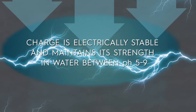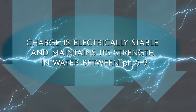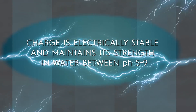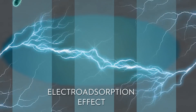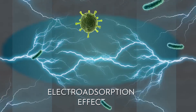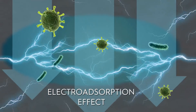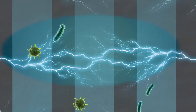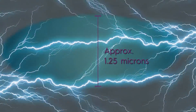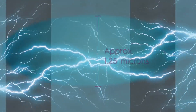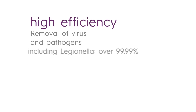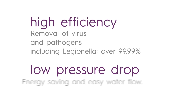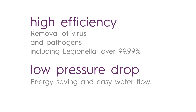The charge is very stable and maintains its strength in water having pH between 5 and 9. The power of the charge field captures contaminants that enter the media. This allows the media to have a rather large pore that facilitates the water flow. The result is high efficiency and low pressure drop compared to mechanical filtration.